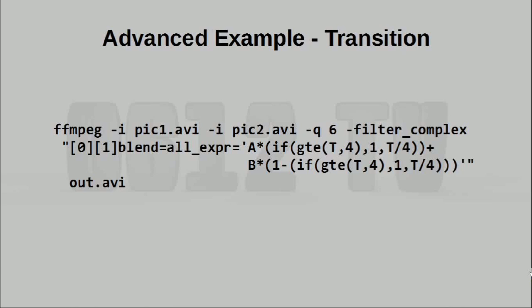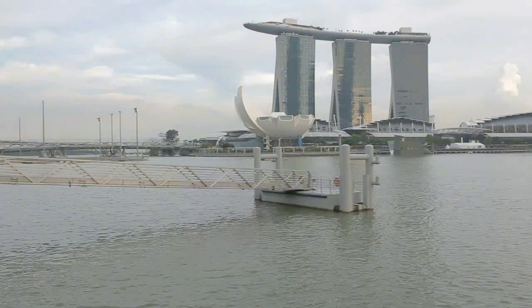Very interesting things can be done. For example, in this command call which comes from the official documentation, what has been created is a transition. Essentially a blending operation is happening, and the intensity of the blending between A and B — which are the two inputs — actually changes over time, as there is a dependency on T. Basically over a period of 4 seconds, one of the two inputs is being faded out while the other is being faded in. This is actually an extremely powerful feature available in FFMPEG.